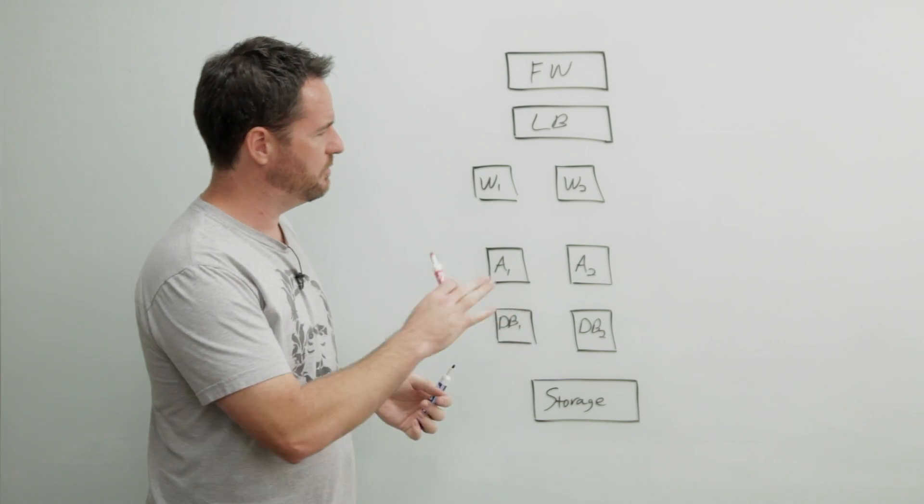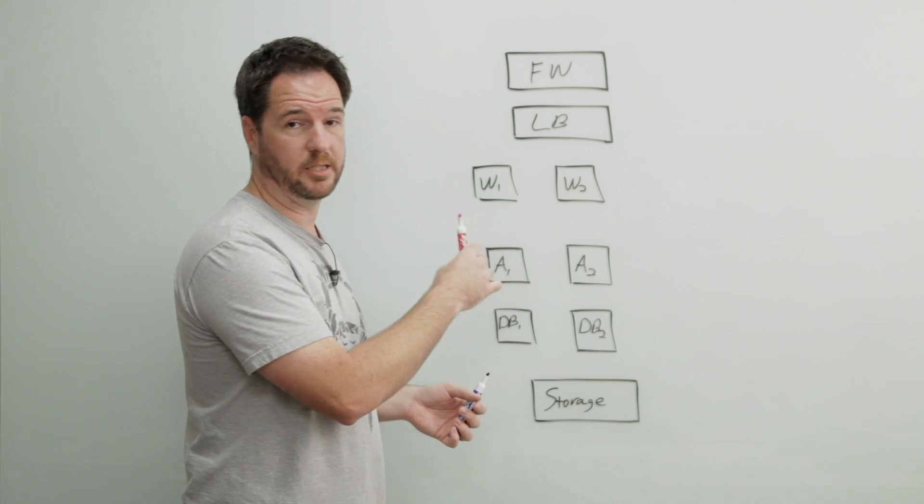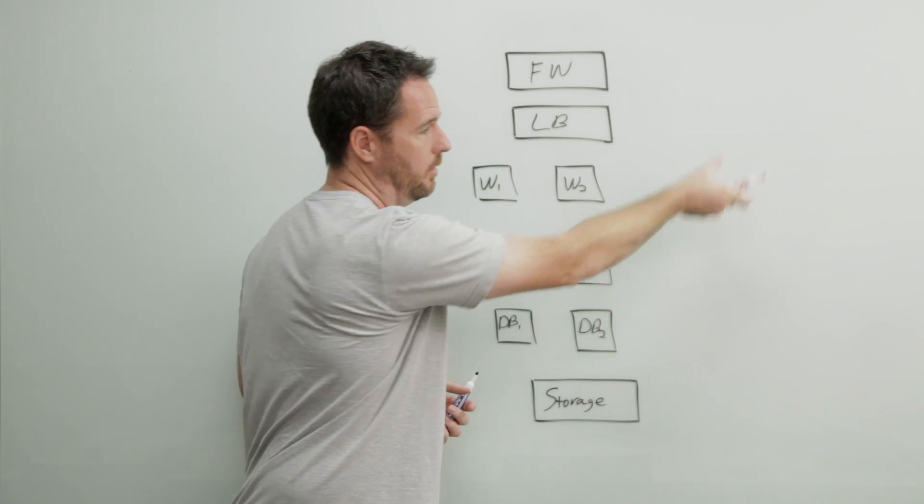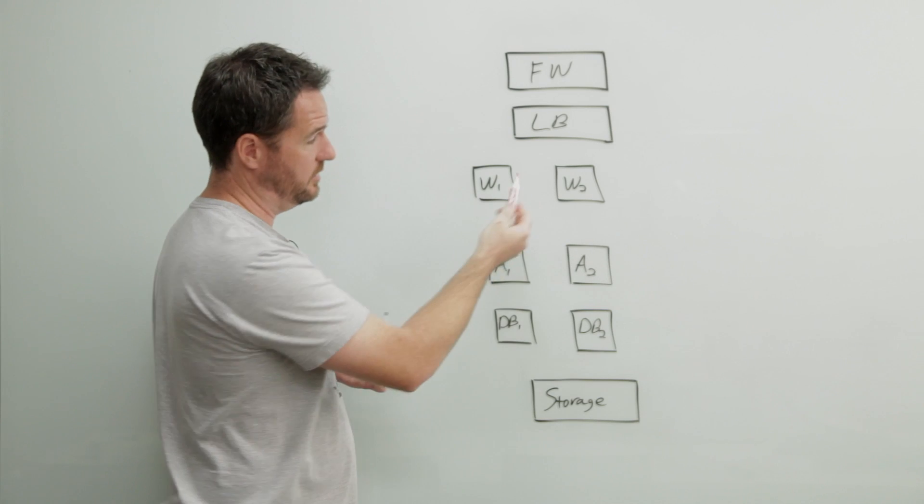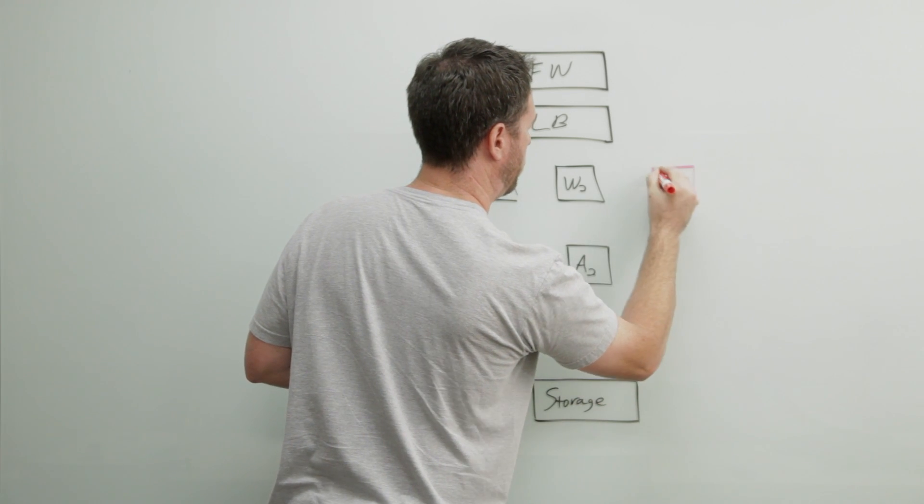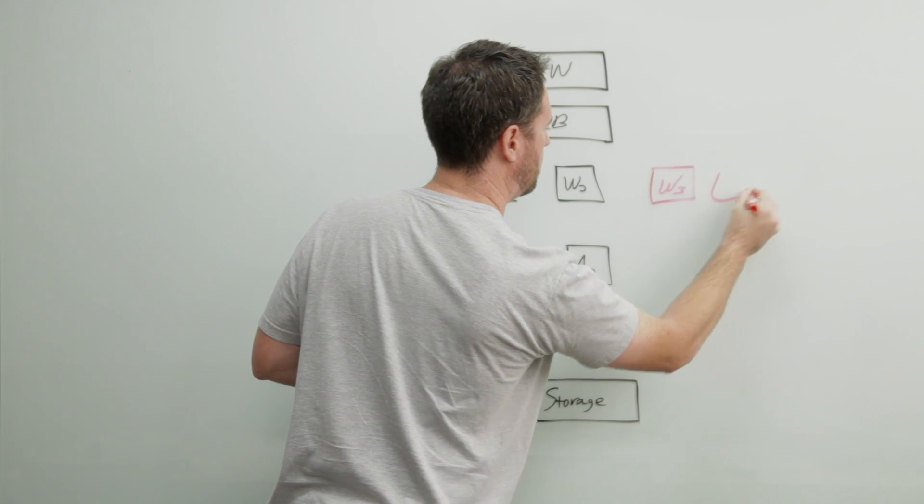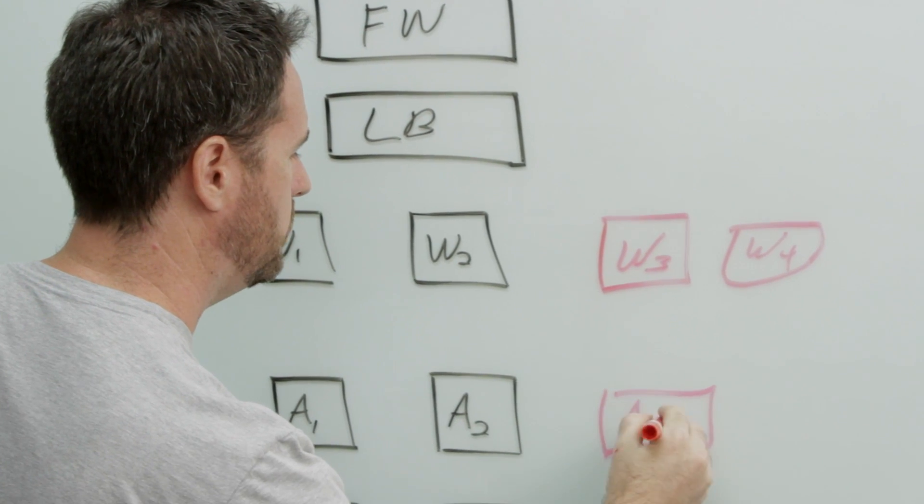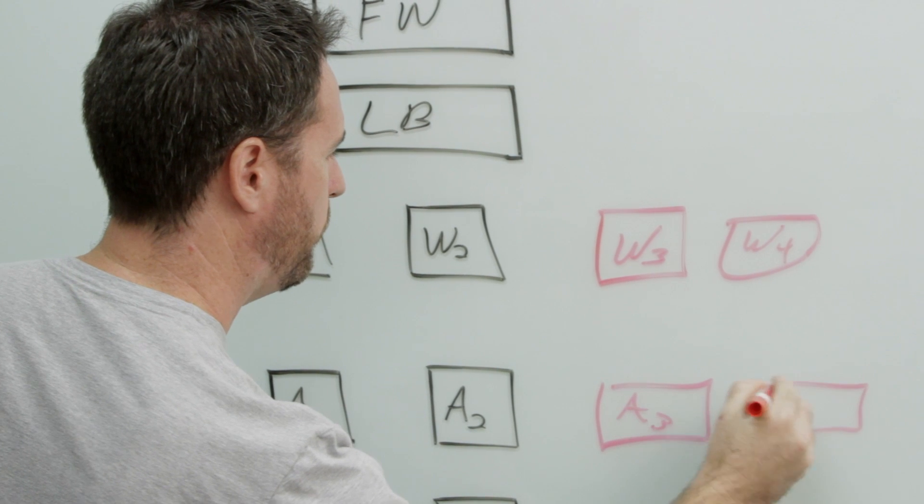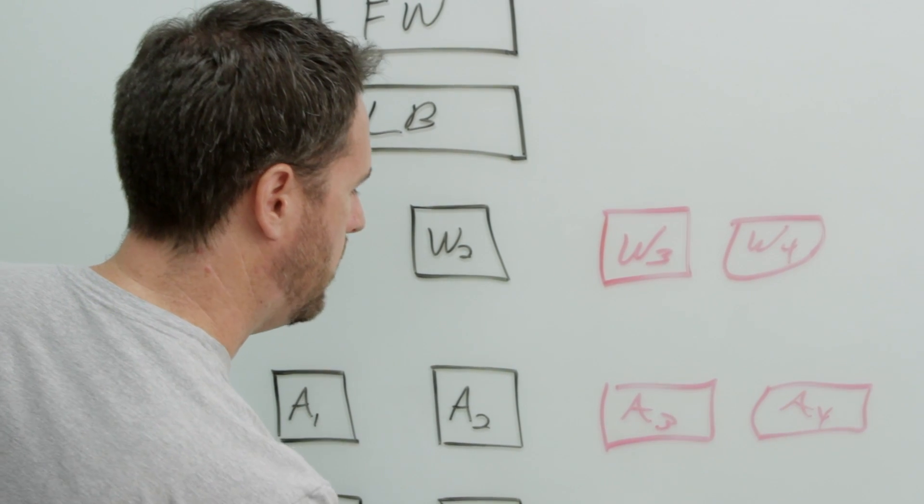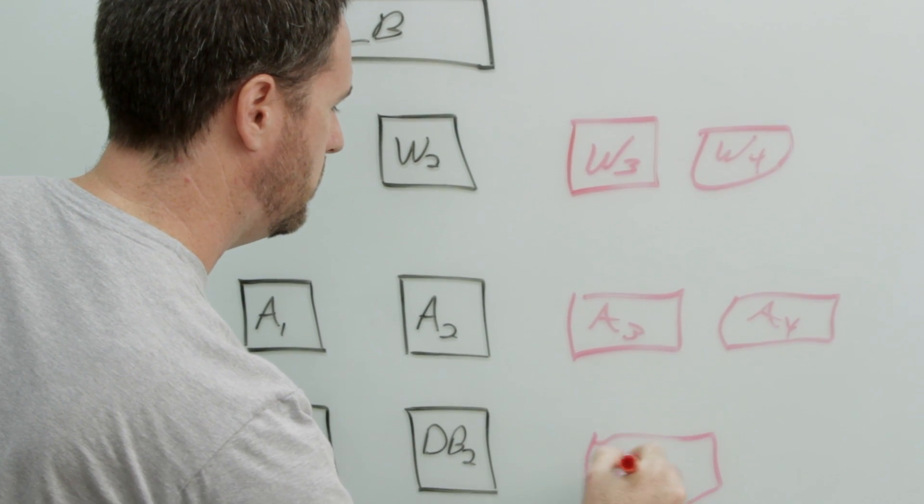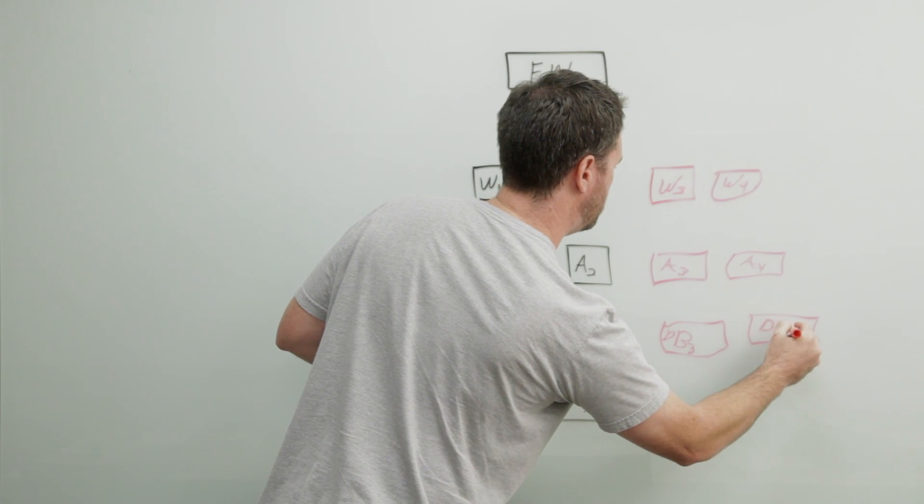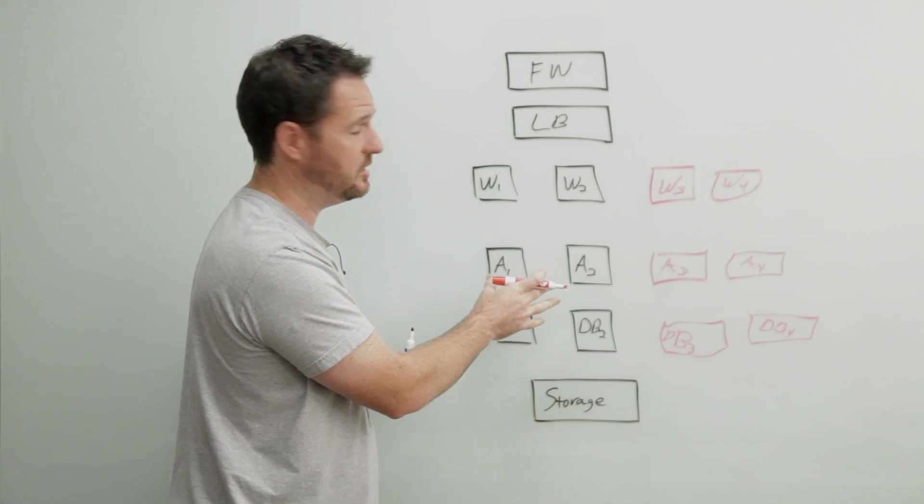I mentioned before some of our SaaS customers have found benefits when using a pod architecture. What that means is they take the same gear and they just duplicate it horizontally down the line. So in this instance you would have another pair of web servers that you deploy that perform the same function, another pair of app servers also performing the same function, and another pair of database servers.